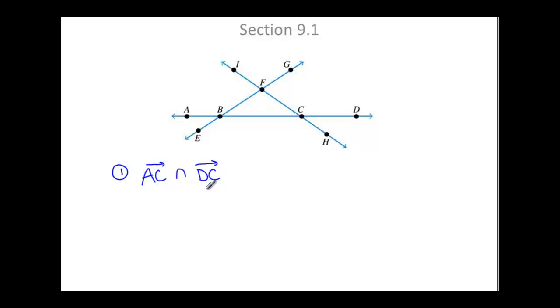And then we'll do the same thing with DC and find what they have in common since this is the intersection. So right now, ray AC, that would have to begin with A. That would have to be the end point, and it's included on that ray. And then every point in the direction of C, and that's going to keep going on forever and ever in that direction.